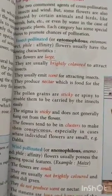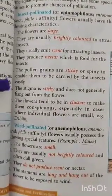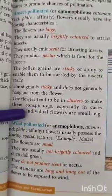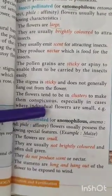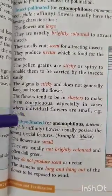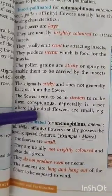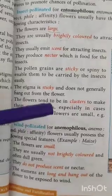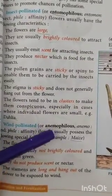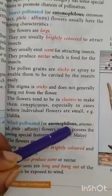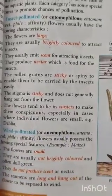In today's class we start with wind pollination. The flowers which are pollinated by wind are known as wind pollinated flowers or anemophilous flowers. The name for wind pollination is anemophily, and the flowers are known as anemophilous flowers.